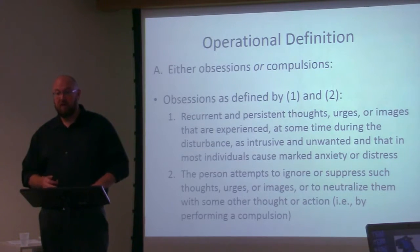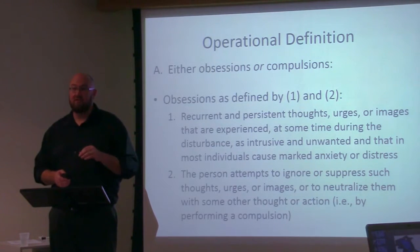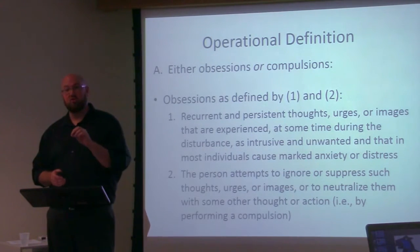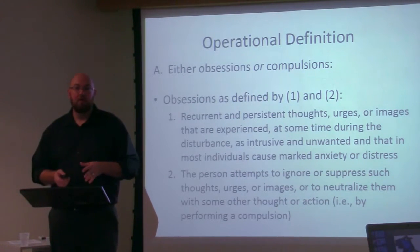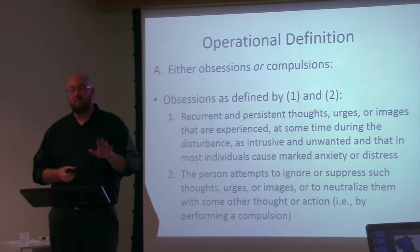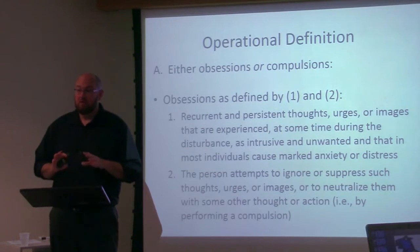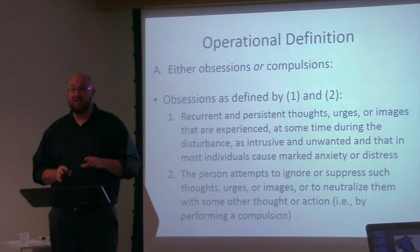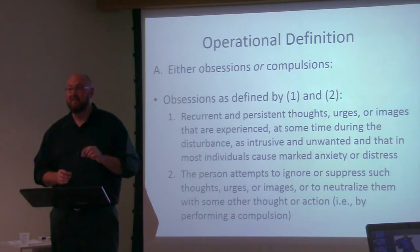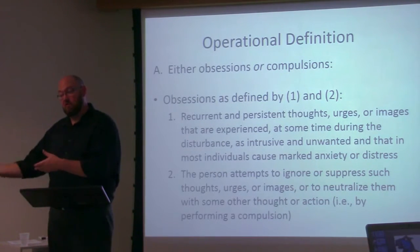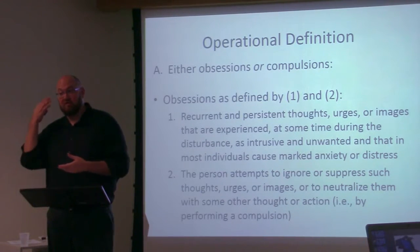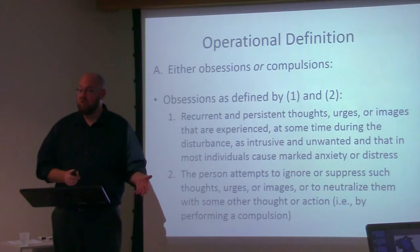Defining OCD in DSM-5: first, it requires the presence of either obsessions or compulsions. This differs from DSM-IV, where you had to have both obsessions and compulsions. It turns out that between 95 and 98% of people with OCD do have both, but there is a very small subset — for example, very small children unable to report their thoughts — who may have just one.